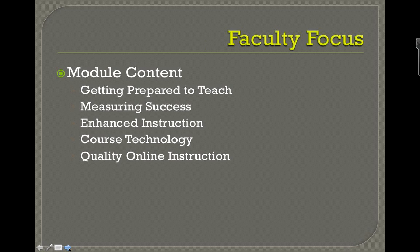What faculty said was they weren't getting consistent information. They needed to know how to get prepared. They wanted to know more about assessment. They wanted to know more about how to engage students in the instruction. They wanted to know about all the different technologies available and what the usages were. For online courses, we wanted to introduce faculty to what quality online instruction was. The school I was at was a dispersed model, but at our institution, each school — and I'm in Arts and Sciences — faculty still don't have access to all of this information in one place.